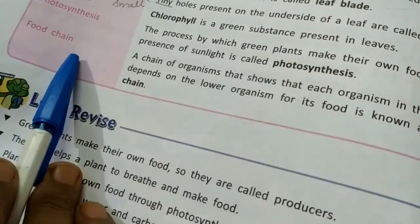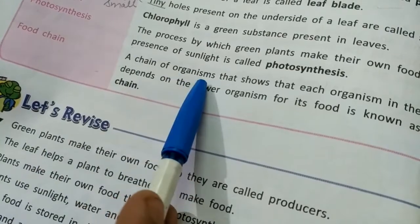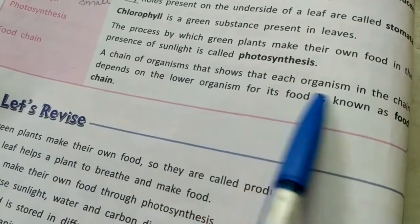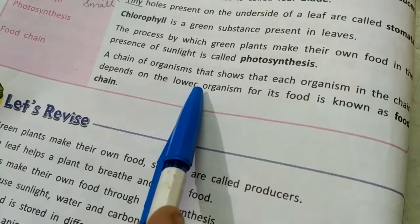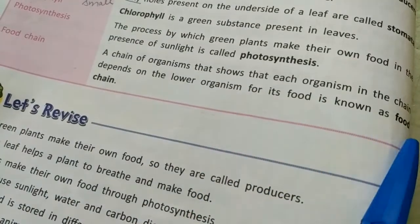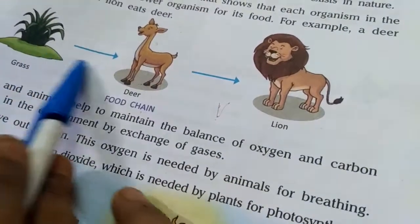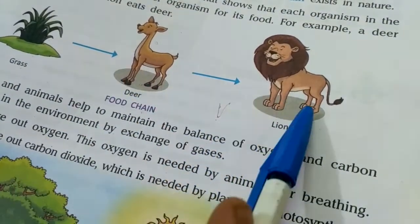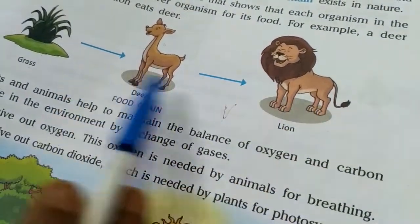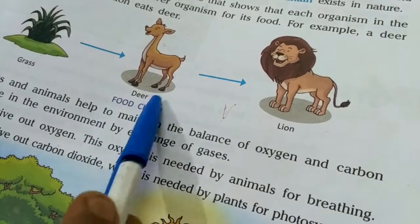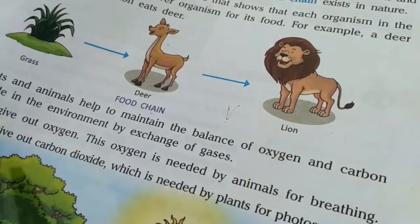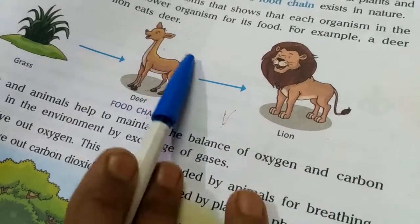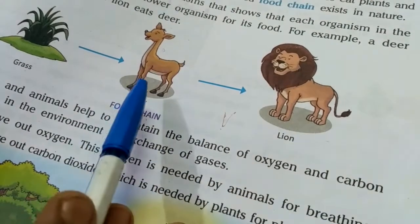Next is 'food chain.' A chain of organisms that shows each organism in the chain depends on the lower organism for its food is known as a food chain. This can be understood by a diagram showing the chain or sequence of living organisms where each organism is dependent on the one below it for food.